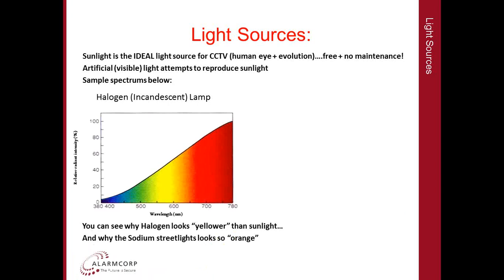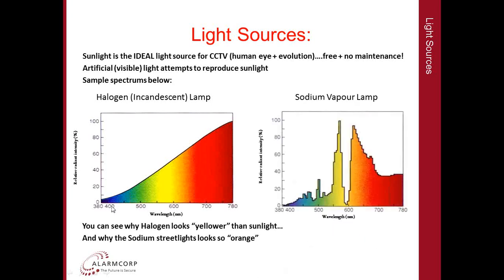A sample spectrum of a halogen incandescent lamp shows a lot more light output in the yellow and red portion of the spectrum as opposed to the blue spectrum — this is why halogen looks a lot more yellow than sunlight. Next, a sodium vapor lamp, typical of the street lamps seen on major roads around Australia, has most of its light output very much in the yellow and orange part of the spectrum with very little output in any other portion. This is why sodium street lamps look so predominantly orange.